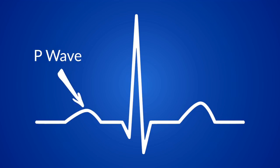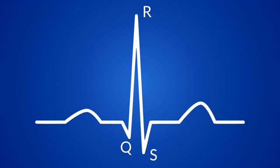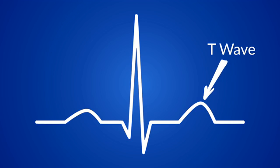What I want to do is look at each component of the electrocardiogram and break it down. The first thing we see is this little bump on the graph — this is called the P wave. Then we have this structure here called the QRS complex. And lastly, we have another little bump called the T wave.